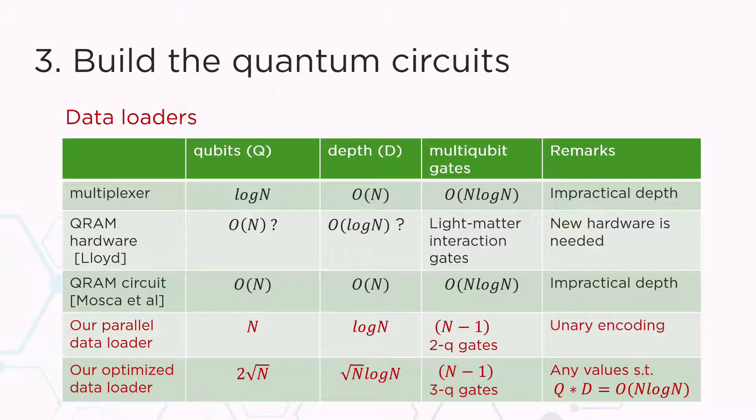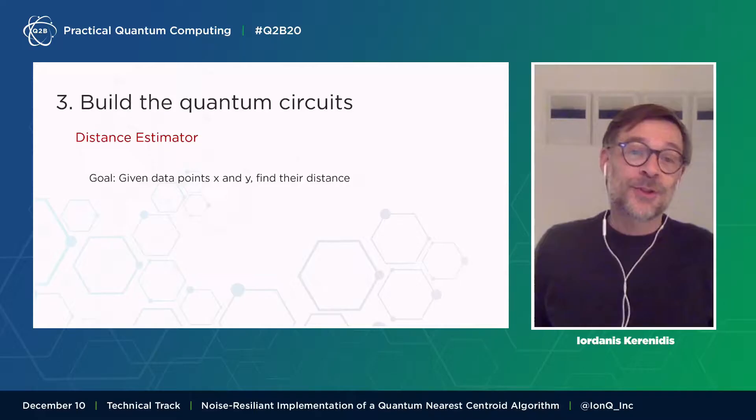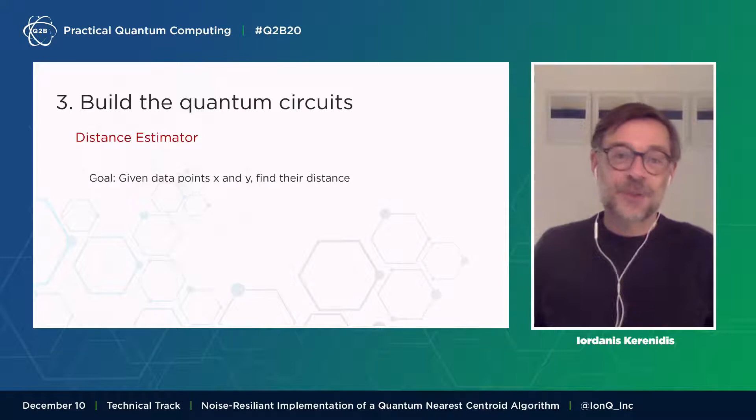Here is how the data loaders work more generally. We define two types of data loaders. The parallel data loader that uses n qubits to encode n dimensional data, but only log n depth and the optimal number of n minus one two qubit gates. But we can do something more, which is that we can optimize this trade-off between the qubits and the depth. And for example, have an optimized data loader that uses square root n qubits and square root n depth. The important thing about the data loaders is that once we encode our classical data into this quantum state, we can do efficiently very interesting operations. And one of the operations is actually this distance estimation.